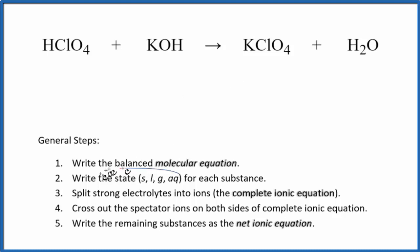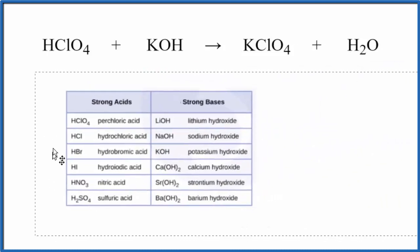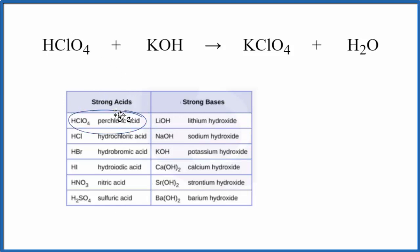Next, we need to look at the state for each substance. This table here lists the common strong acids and strong bases. As we look down the table, we can see HClO4, perchloric acid, that's a strong acid. That means it's going to dissociate or break apart into its ions completely. It's a strong electrolyte. Potassium hydroxide, that's a strong base, so it's also a strong electrolyte.